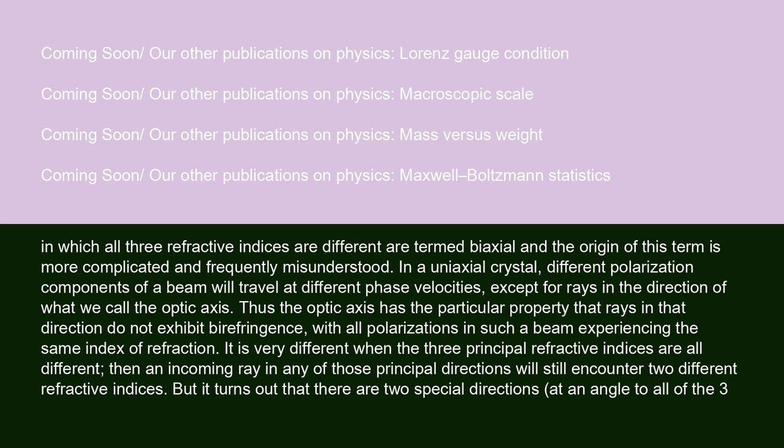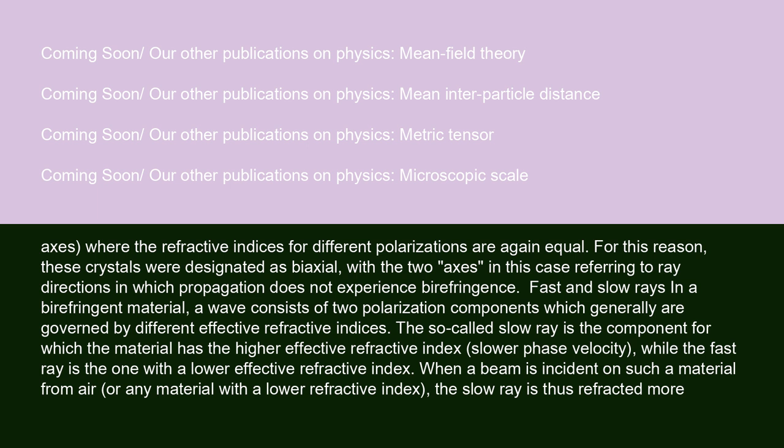Materials in which all three refractive indices are different are termed biaxial, and the origin of this term is more complicated and frequently misunderstood. In a uniaxial crystal, different polarization components of a beam will travel at different phase velocities, except for rays in the direction of the optic axis. Thus, the optic axis has the particular property that rays in that direction do not exhibit birefringence, with all polarizations experiencing the same index of refraction. When the three principal refractive indices are all different, there are two special directions — at an angle to all three axes — where the refractive indices for different polarizations are again equal. For this reason, these crystals were designated as biaxial, with the two axes referring to ray directions in which propagation does not experience birefringence.